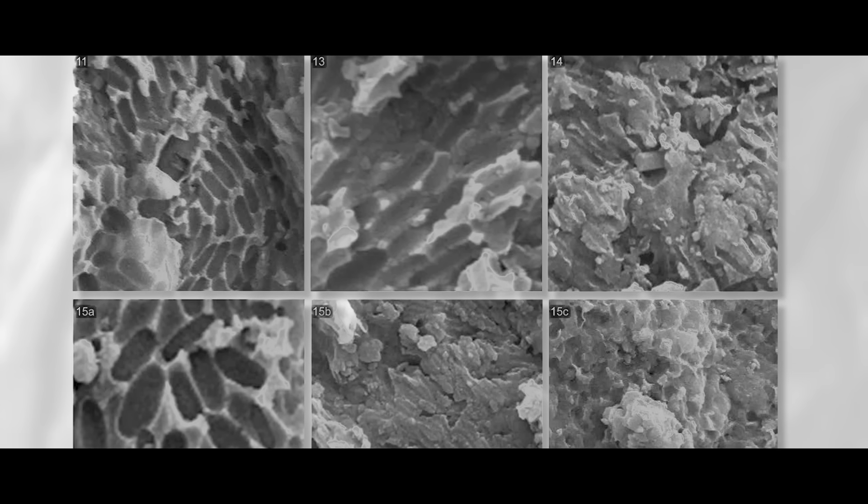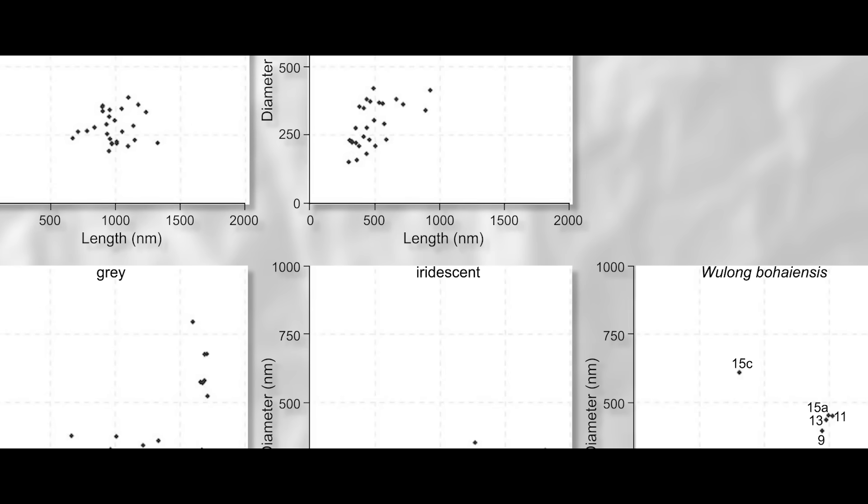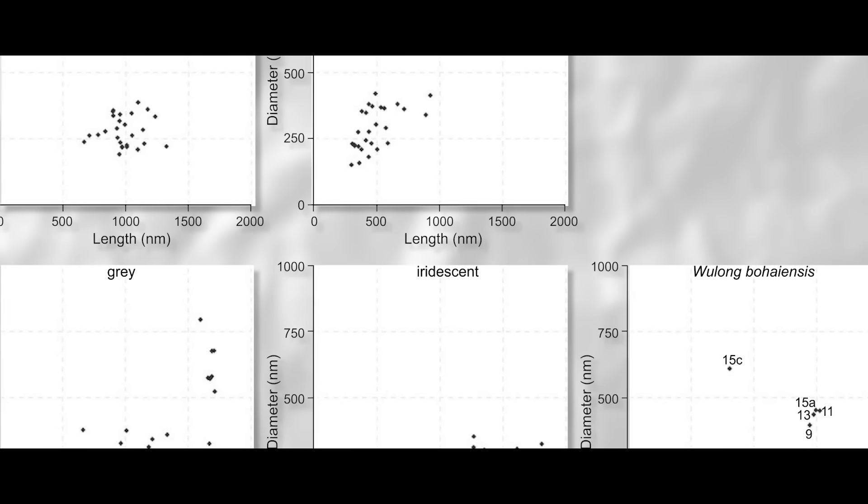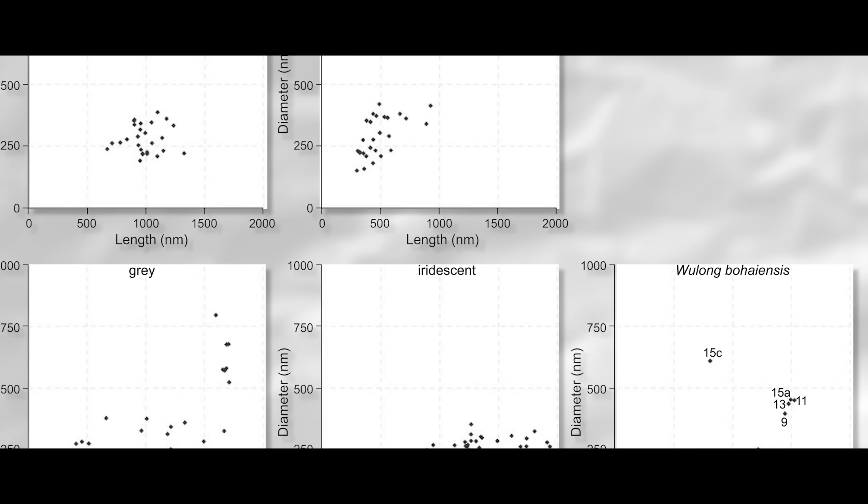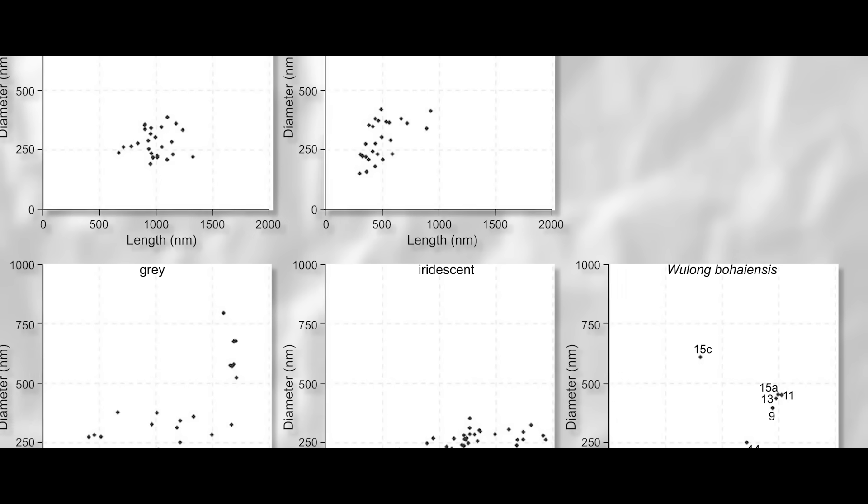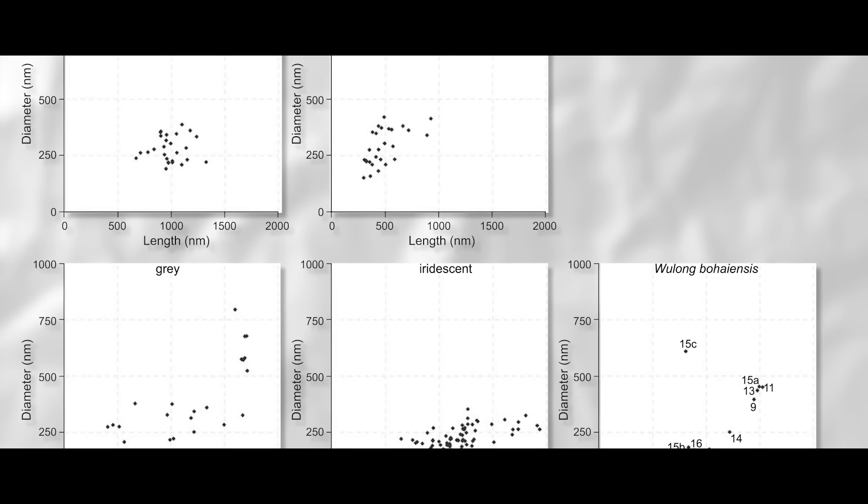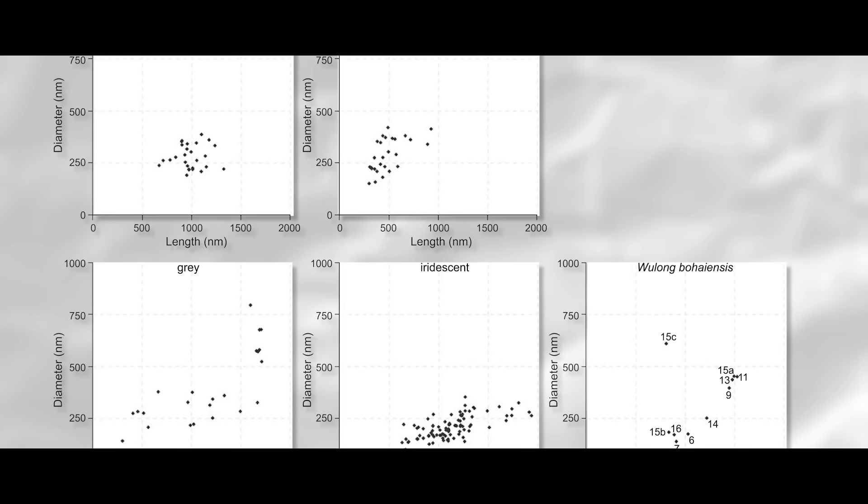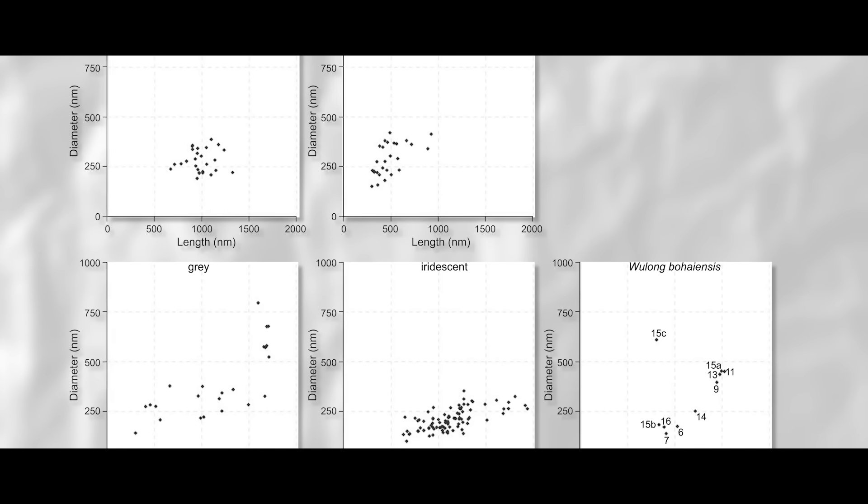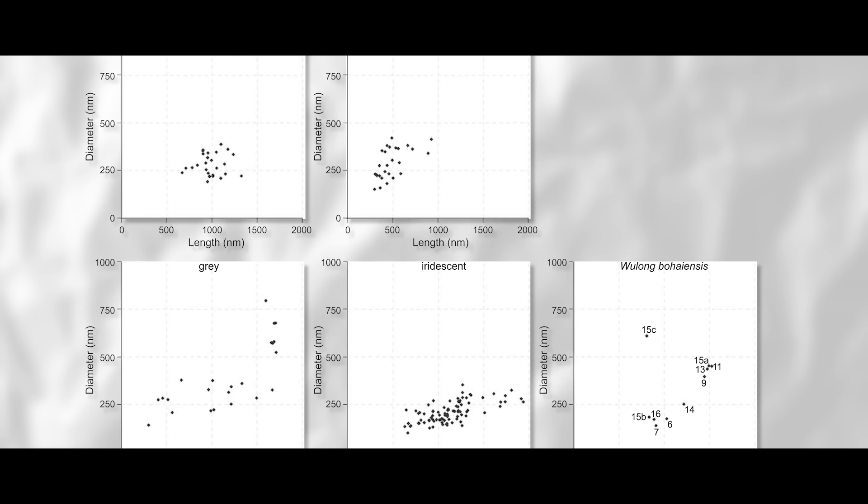So, what did they find? The color prediction results of four analyses agreed consistently for 9 of the 10 individual Wulong specimens, with predictions conforming to iridescent and gray for different samples. Samples 6, 7, 14, 15B, and 16 were iridescent, indicating iridescent feathers across the limbs of Wulong.